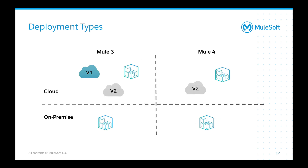This chart shows the different deployment types at a high level. Mule 3 allows you to leverage V1, V2, and then the on-worker memory or file system. If you deploy a Mule 3 application to on-prem, it's going to use the default on-prem file store. From a Mule 4 standpoint, you only have the option of V2 as well as the on-worker memory store. And on-prem for Mule 4 is the same as Mule 3.